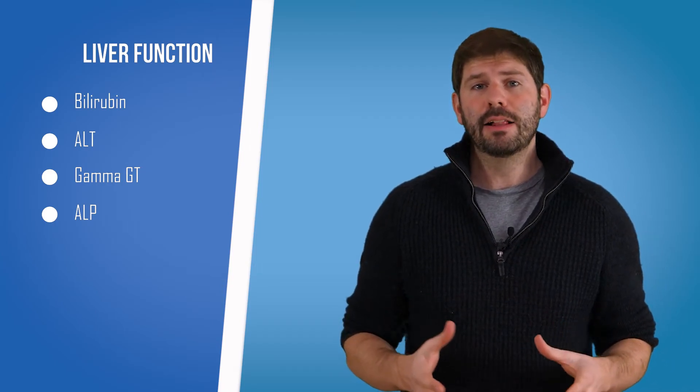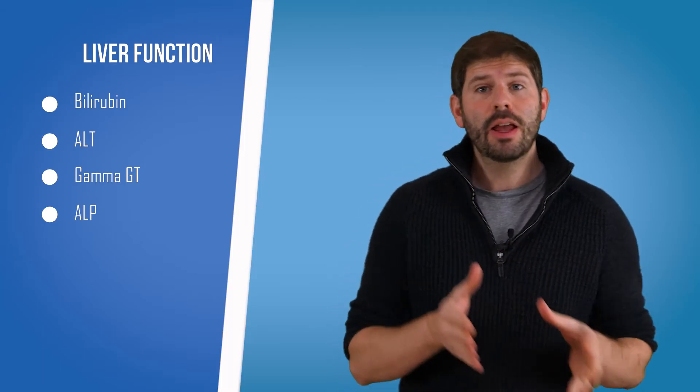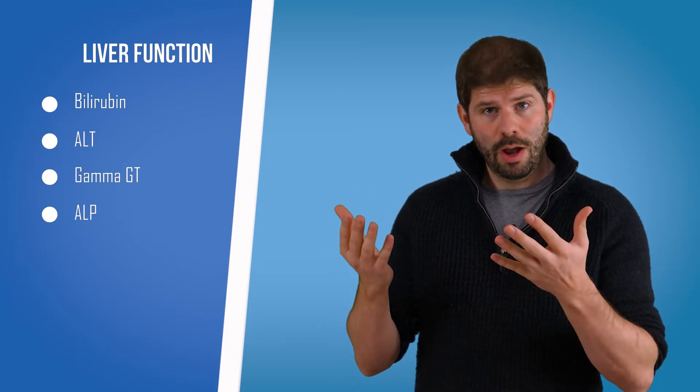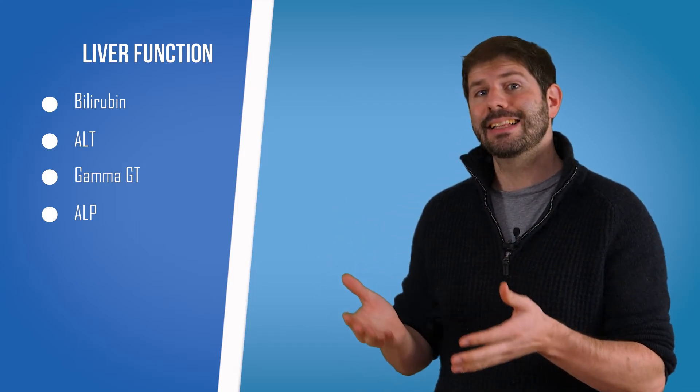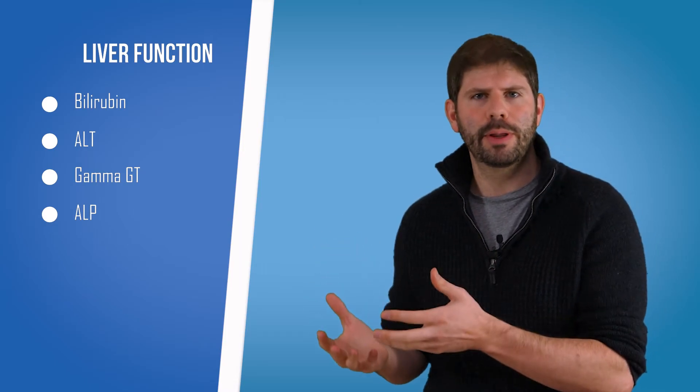And finally, ALP. This is another enzyme found in a great deal of quantities in the liver but also in the bone. If there's a liver problem, it would go up, but we'd also expect to see that ALT and the gamma GT probably go up as well. That's telling us that there's probably a problem in the liver.